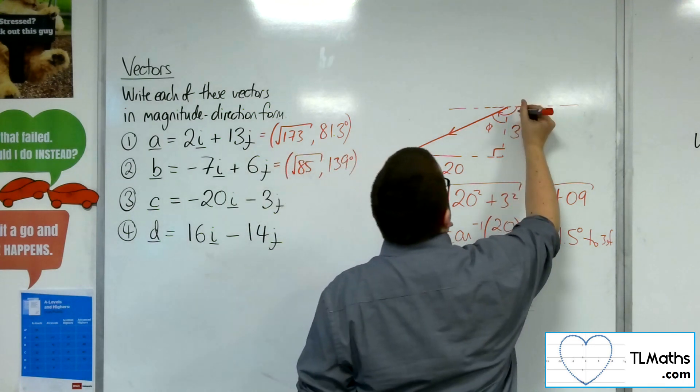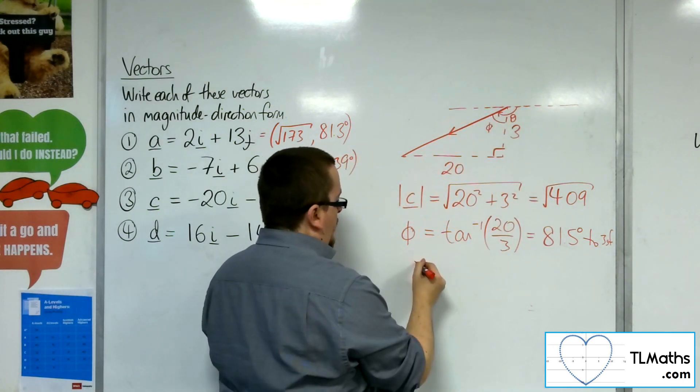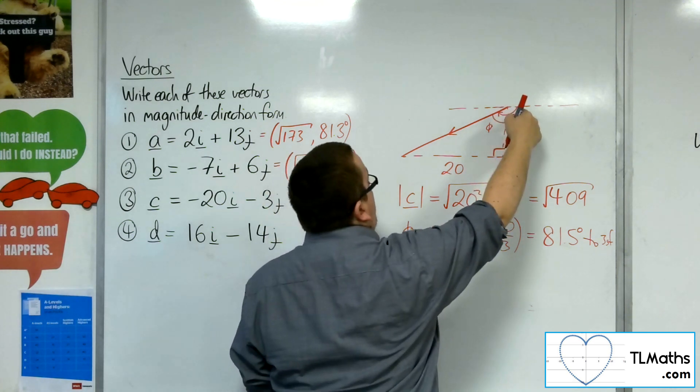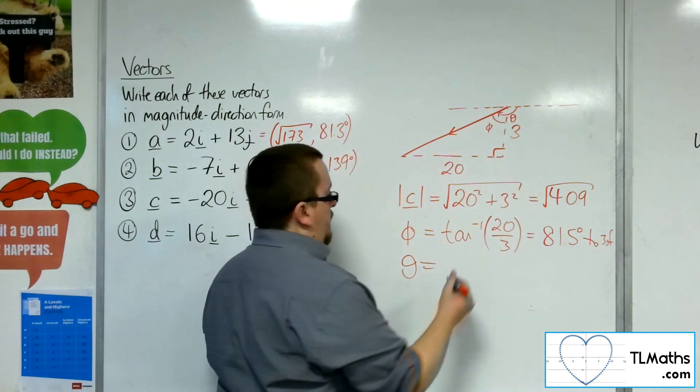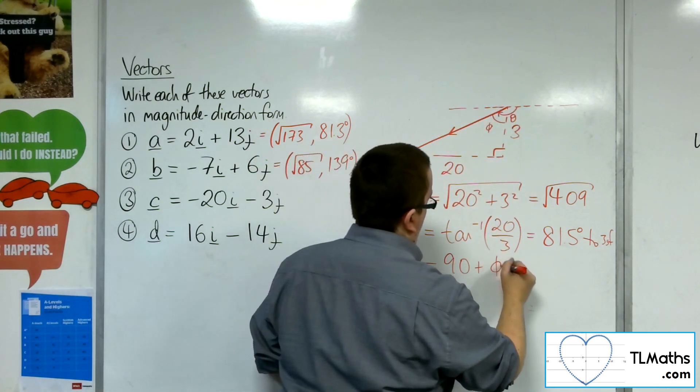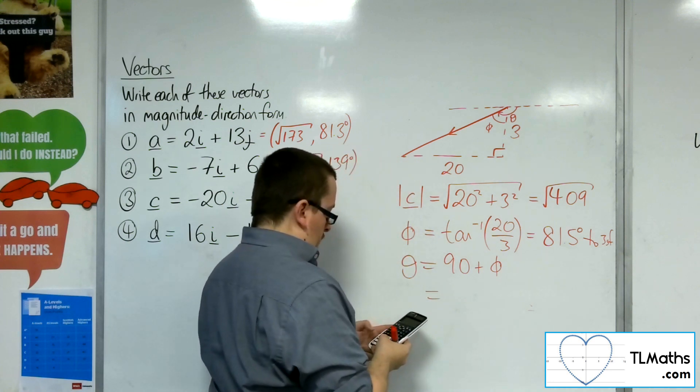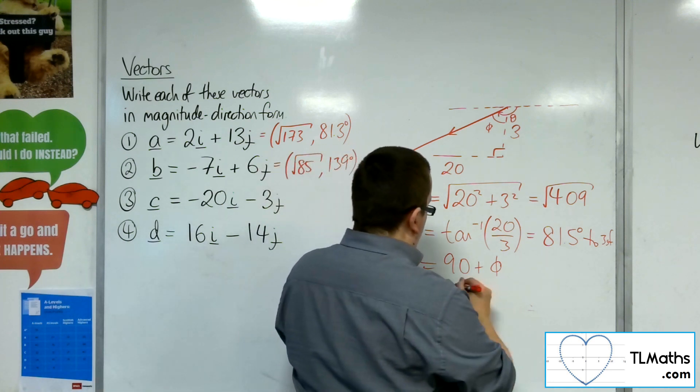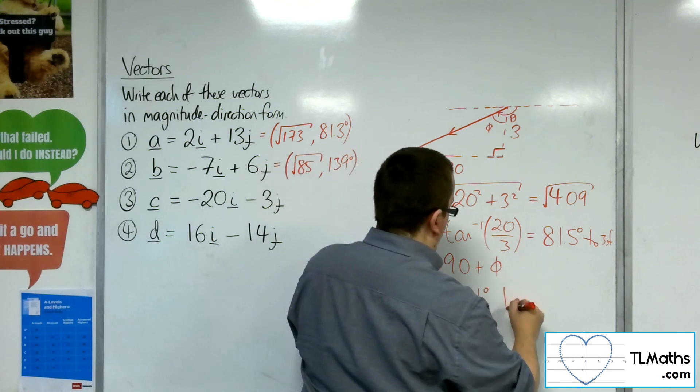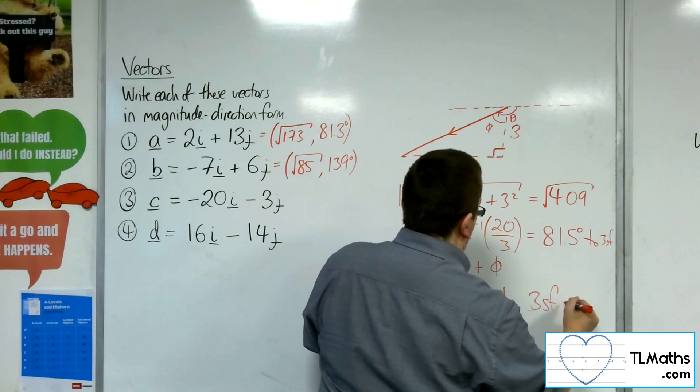So, the theta, the angle that I want, will be 90 plus phi. So, add 90 onto that. So, we get 171 degrees to 3 sig fig.